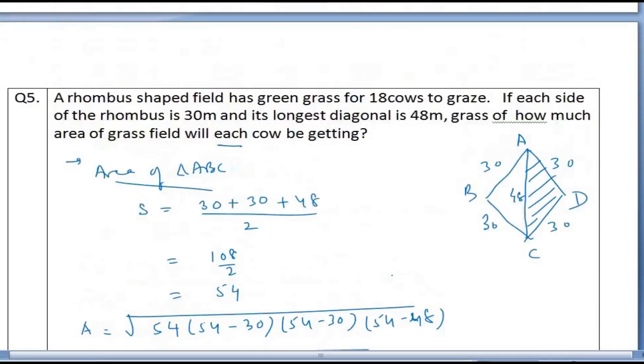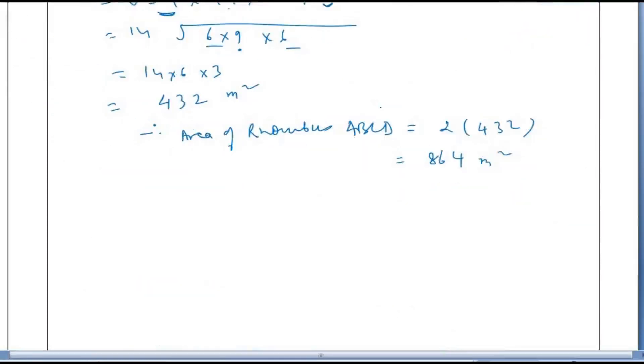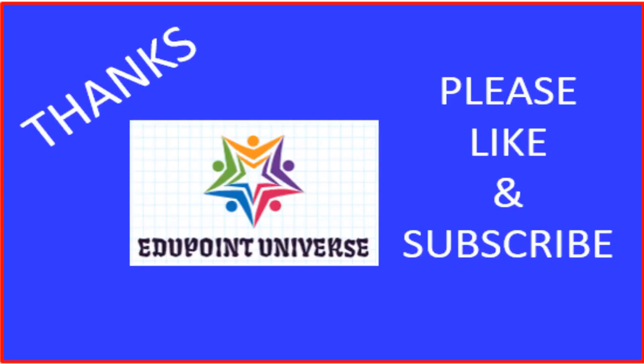In this much area, how many cows graze? 18 cows. So 18 cows have this much area. So for 1 cow, how much area? 18 cows have area of 864 m² for grazing. One cow will have: thus, one cow gets area for grazing equal to 864 into 1 by 18. That is 48 meter square. Sum completed. Got it? Goodbye.